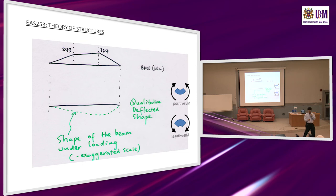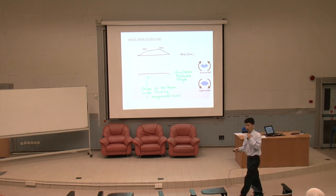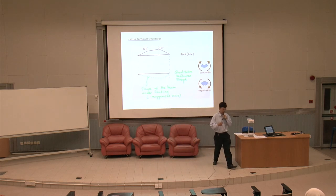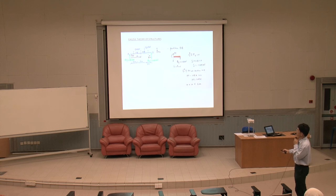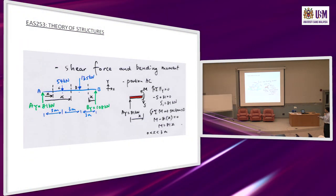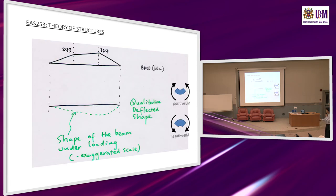If your bending moment diagram is correct but your understanding of positive/negative bending moment is wrong, the deflected shape will also be wrong. These are the steps for drawing shear force and bending moment diagrams using the method of section cuts: cut at each portion, calculate shear force and bending moment, then draw. The new addition here is drawing the qualitative deflected shape.